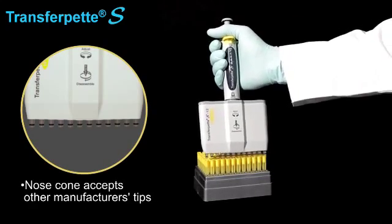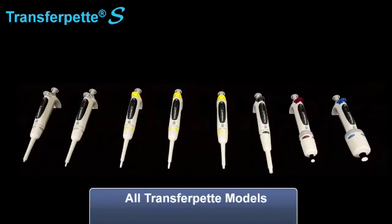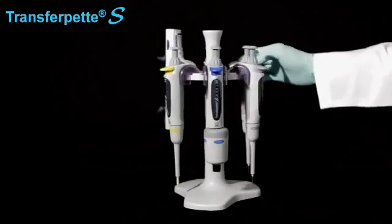All Transferpettes are color-coded by volume for easy identification and selection. A covered nameplate allows for personal identification without the use of messy tape.